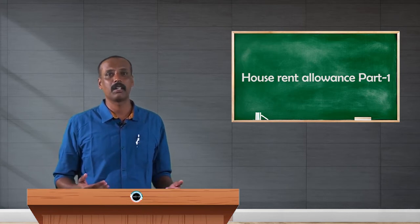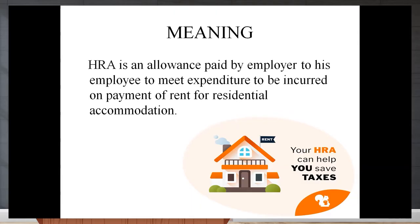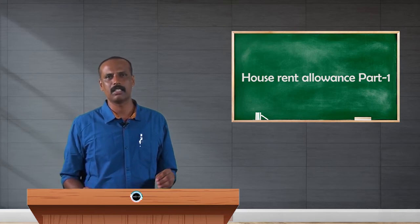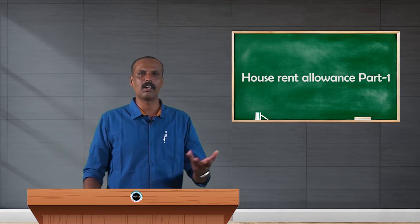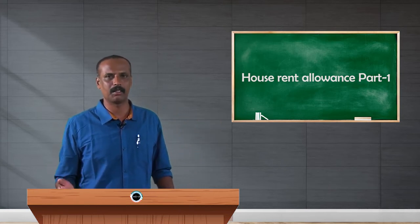First we have to discuss what do we mean by house rent allowance. House rent allowance is nothing but an allowance paid by the employer to his employee to meet the expenditure to be incurred on payment of rent for residential accommodation of the employee. House rent allowance is an allowance paid by the employer to his employee to meet the high rental value of residential accommodation in cities for a particular employee.